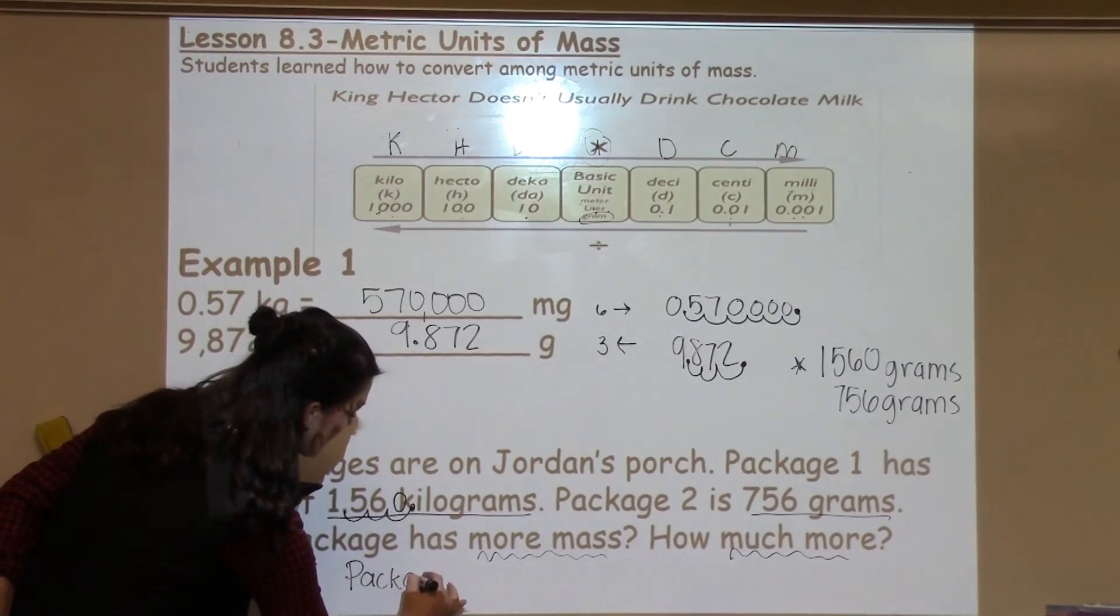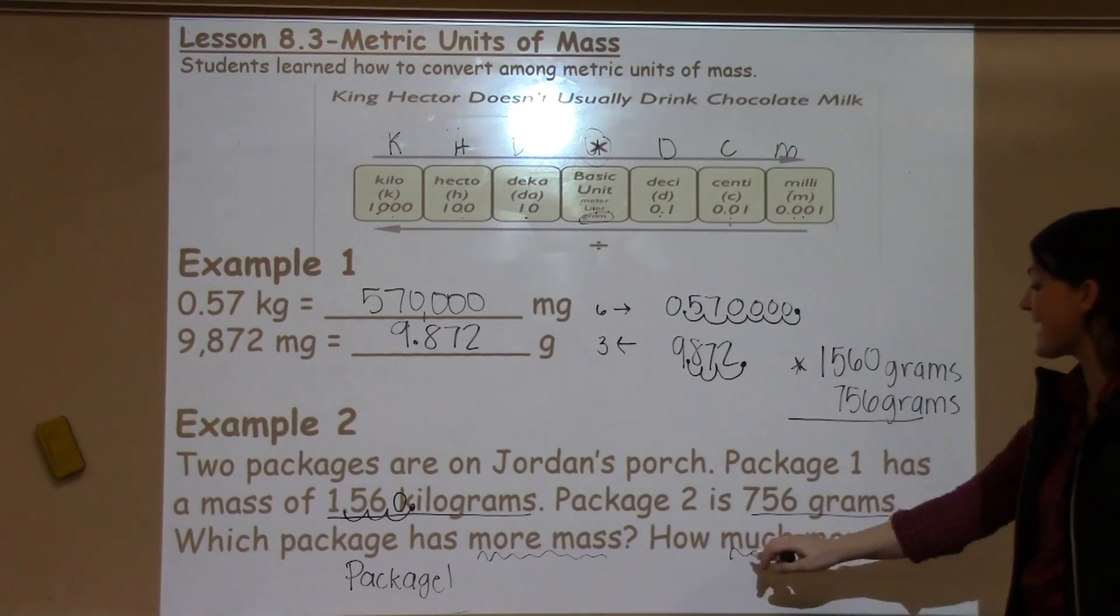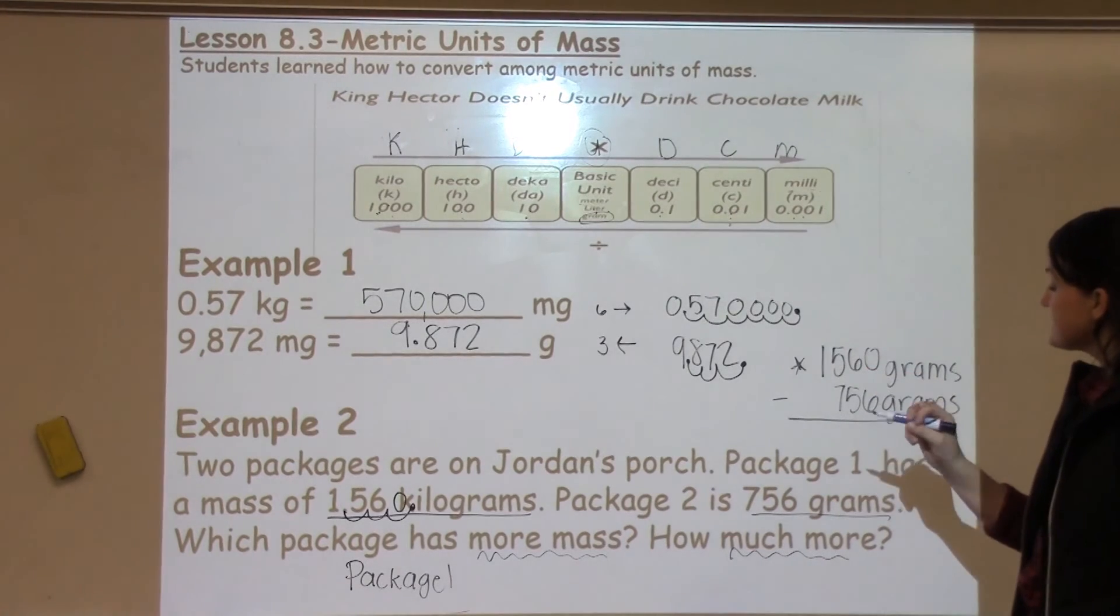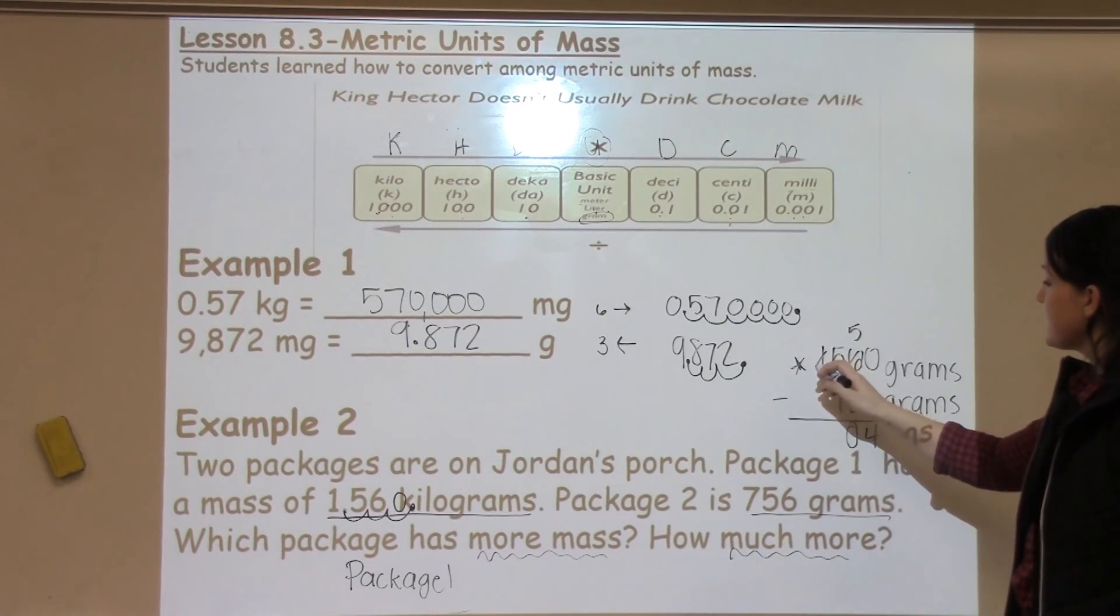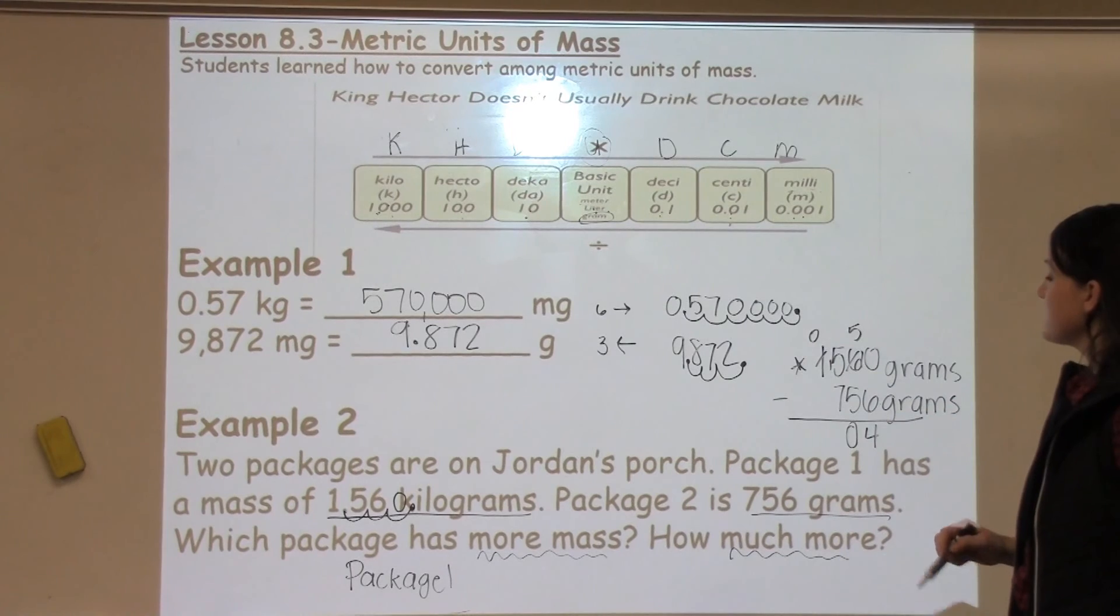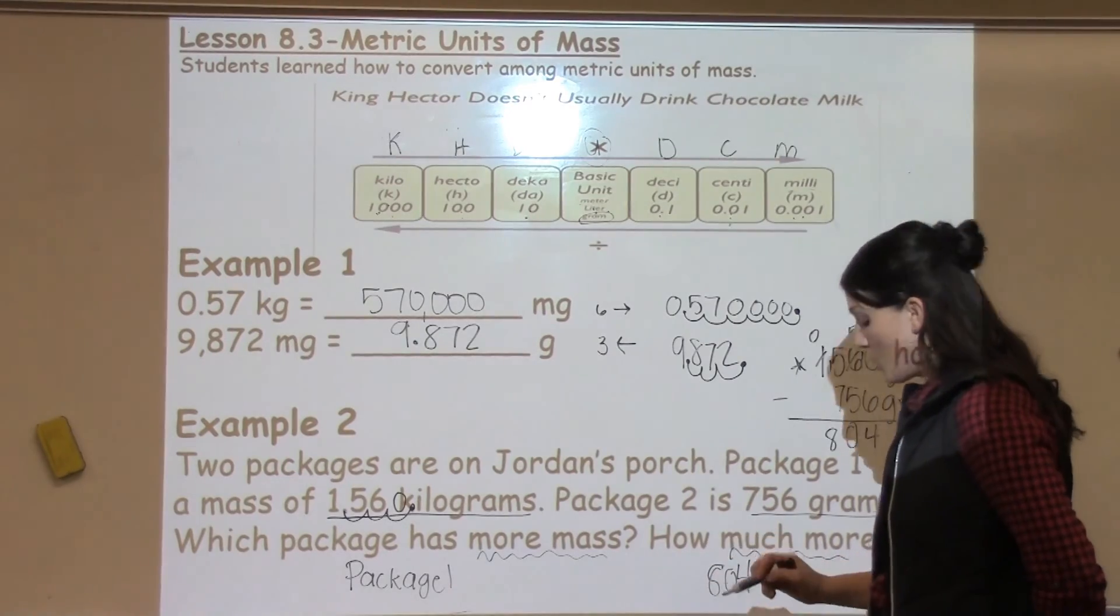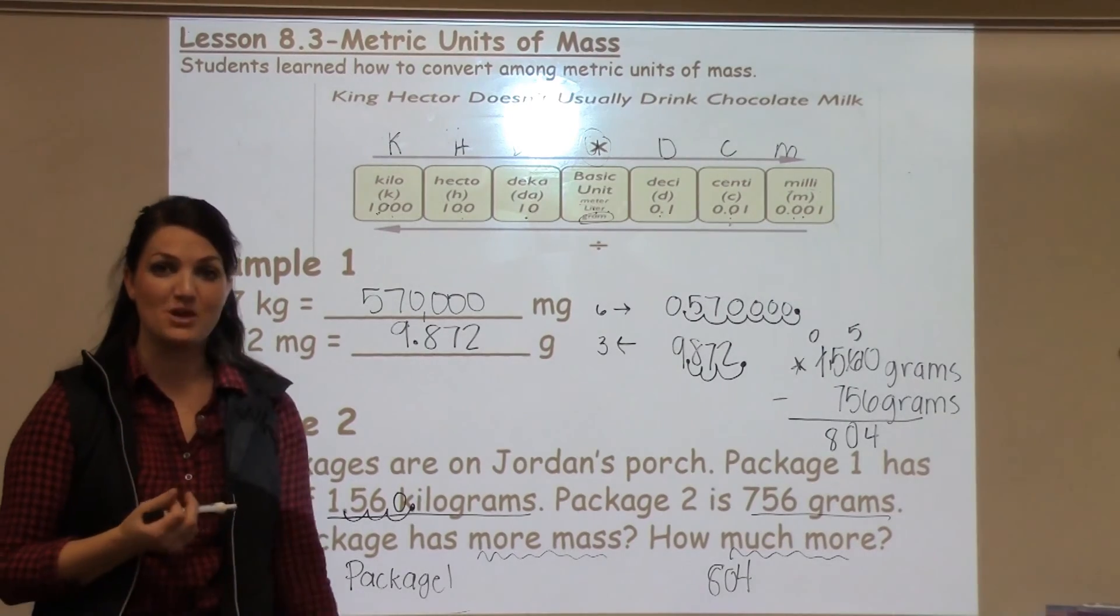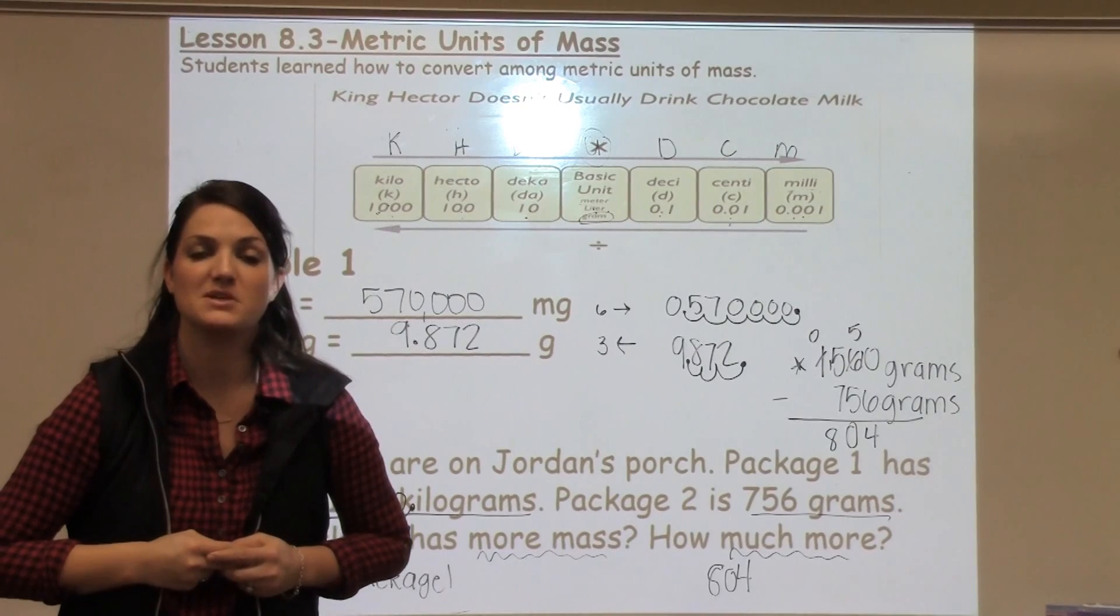But then it says, okay, how much more mass does it have or how much heavier is it? So then whenever I see how much more, I know that I need to subtract to find the difference. I can't take 6 away from 0, so I'm going to have to borrow and make that a 10. 10 minus 6 is 4. 5 minus 5 is 0. 5 minus 7 I can't do, so I'll make it 15. 15 minus 7 is 8. And package A is 804 grams more than package B or package 2. If you have any other questions about converting with grams in the metric system, please make sure to see your math teacher.